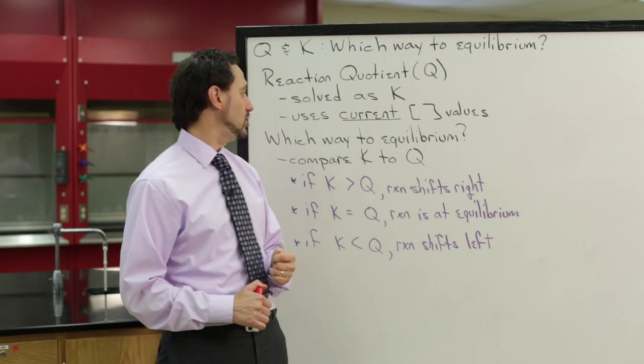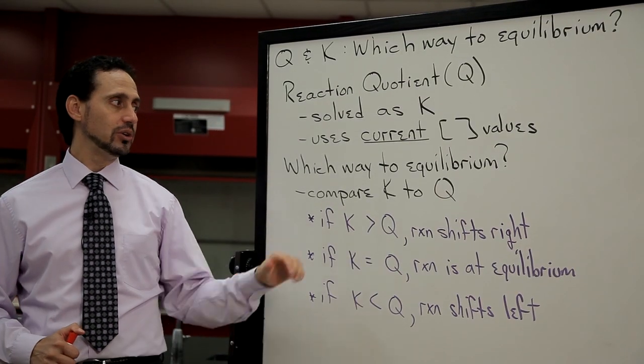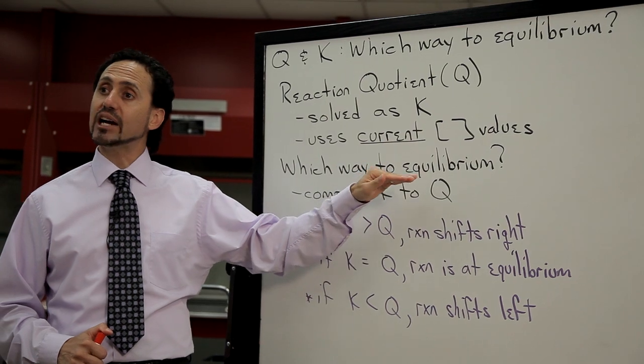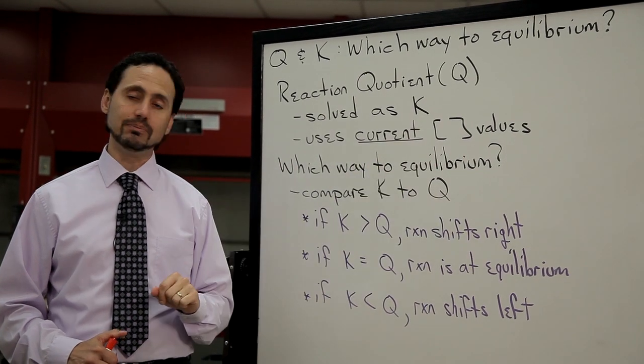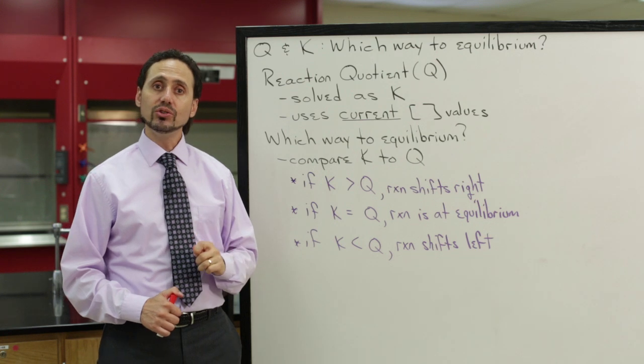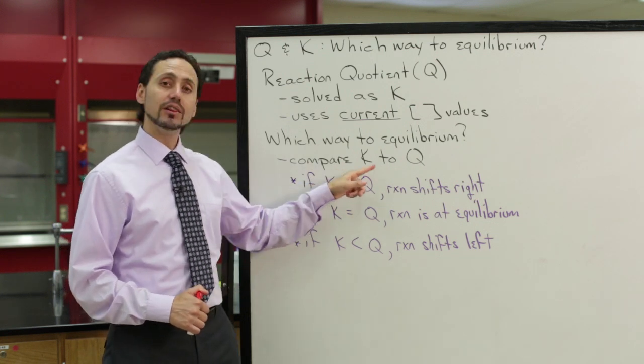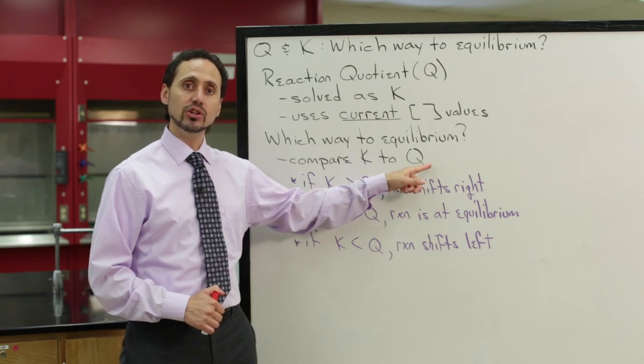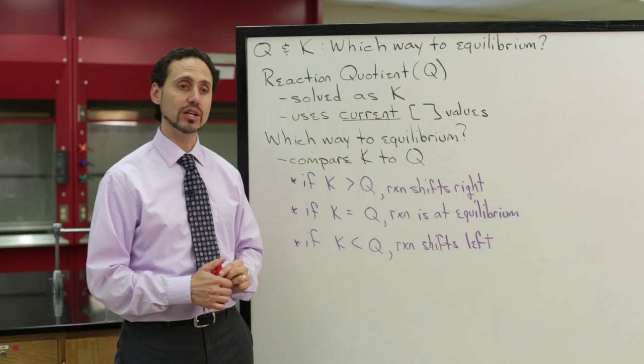Now, once you have your value of Q, what does that tell you? Which way does the reaction need to go to reach equilibrium? In order to do that, we need to compare the values of K to the value of Q for the current concentrations.